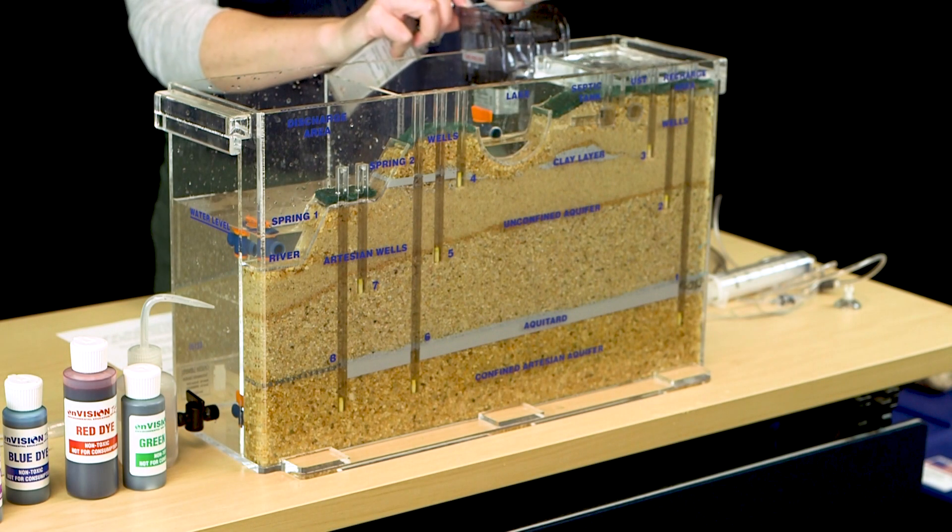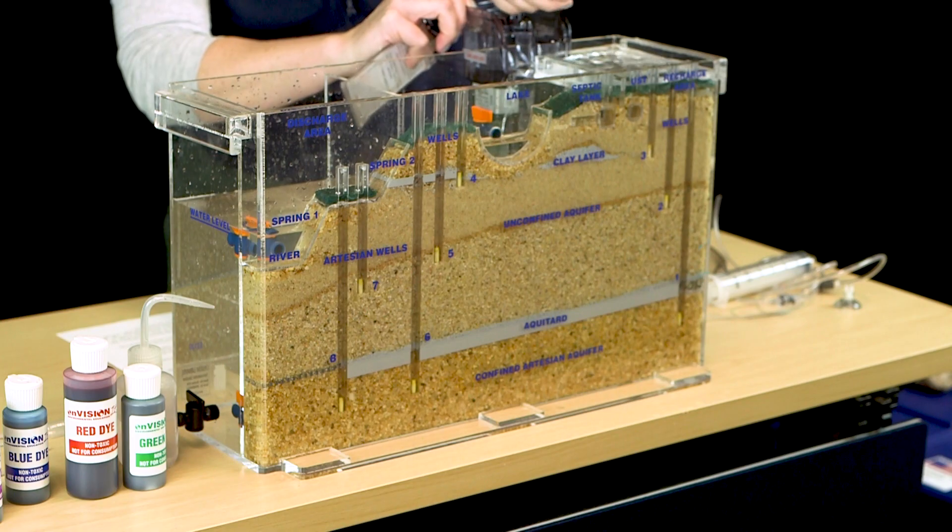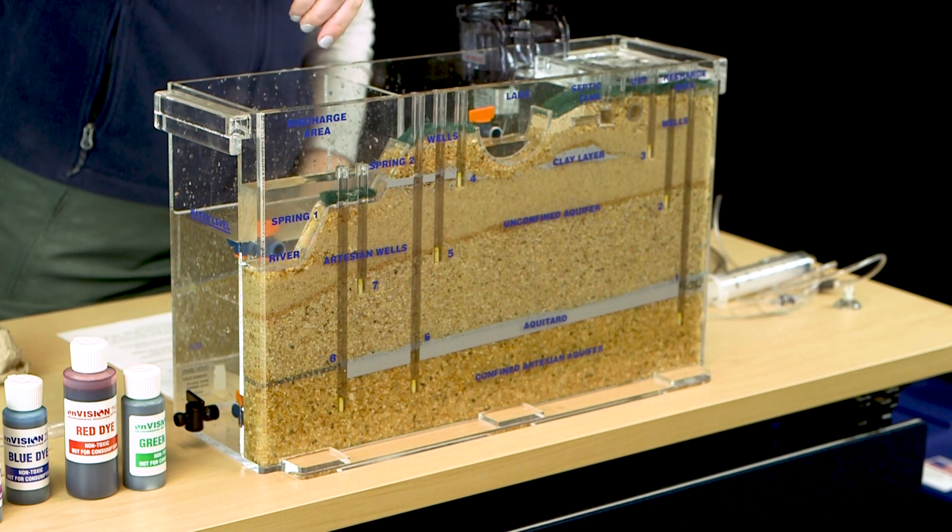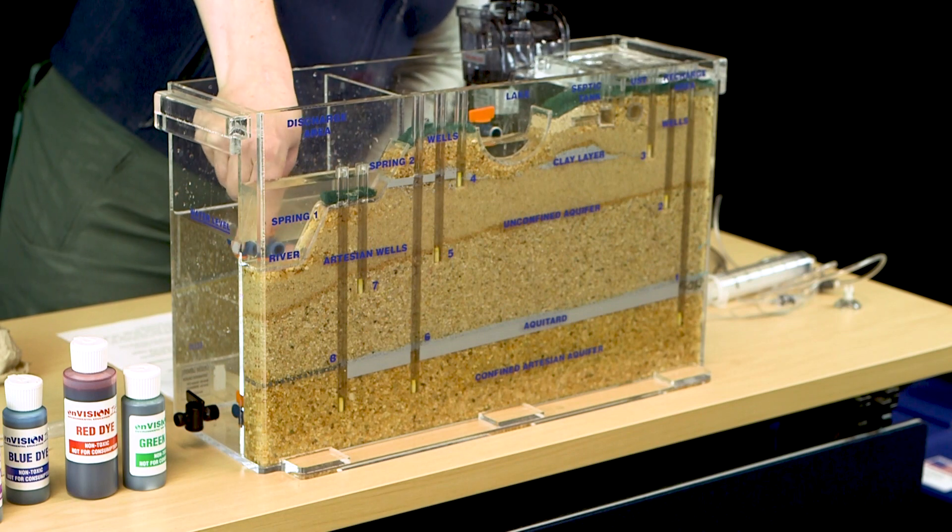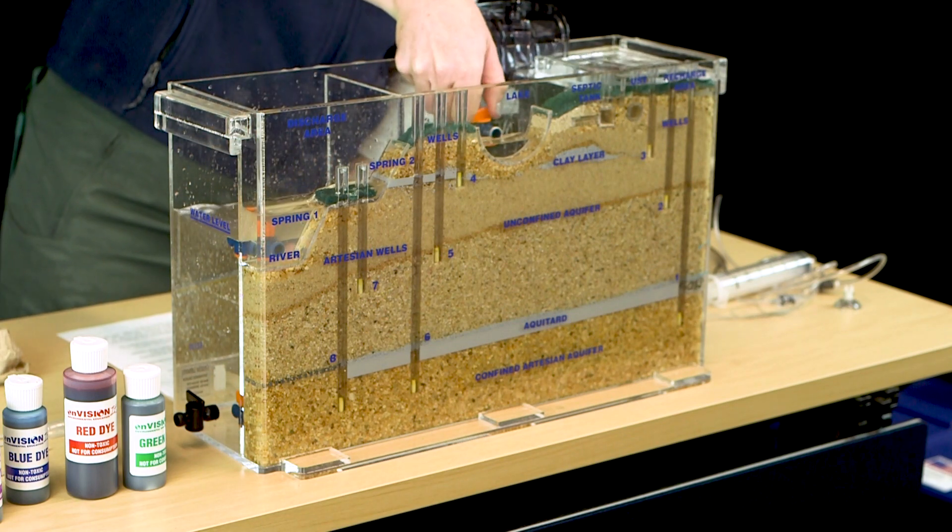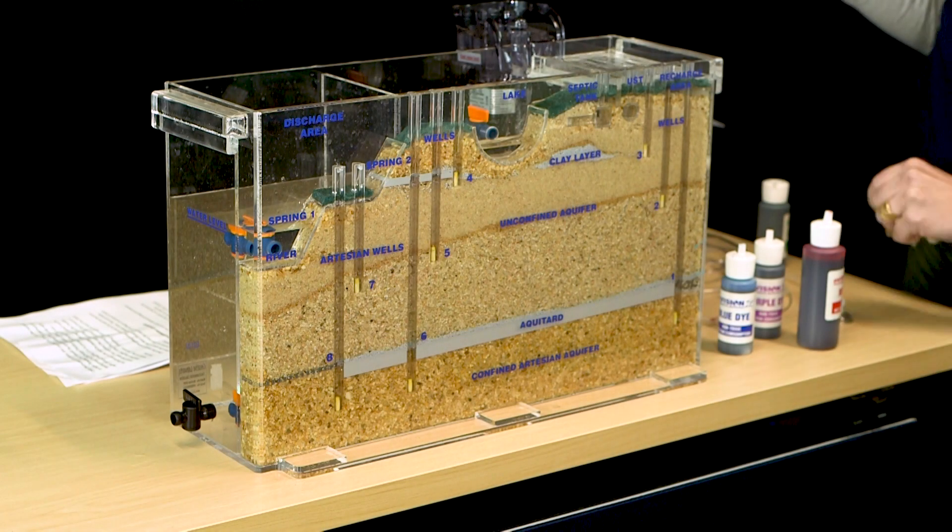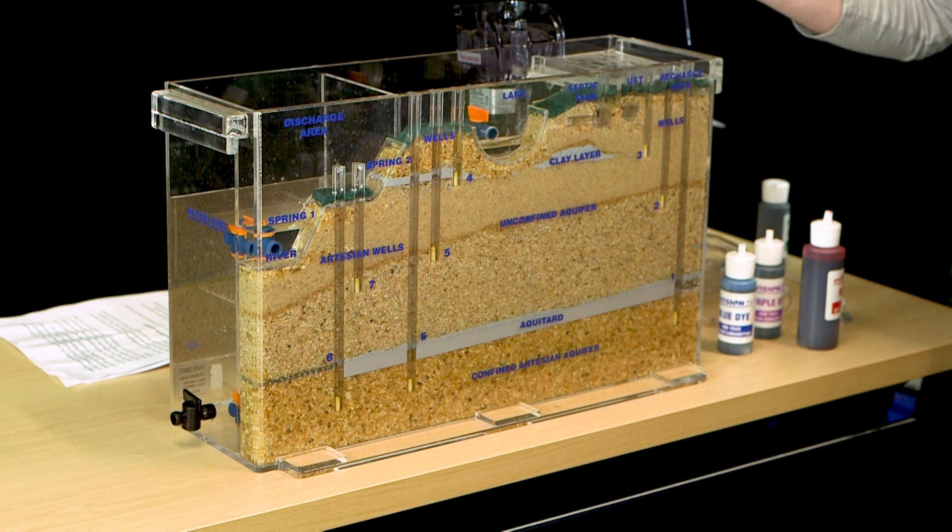Once the model is saturated, slide the pump to the half-on level and open the valve in the river-ocean discharge area. This will enable water to start to flow into the reservoir and begin circulation of water within the model. Now that the model is set up, you can start demonstrating groundwater concepts.